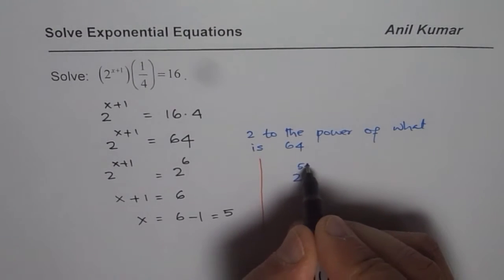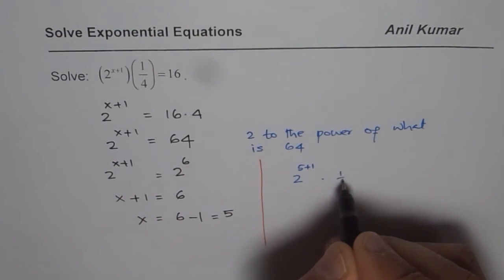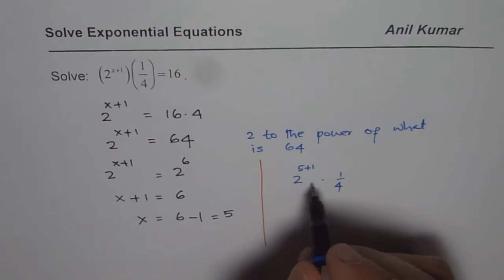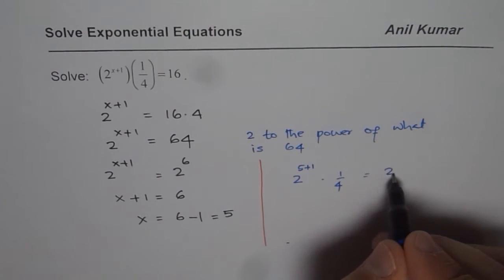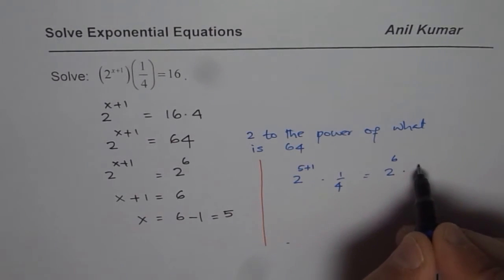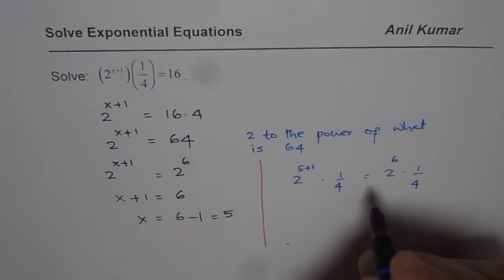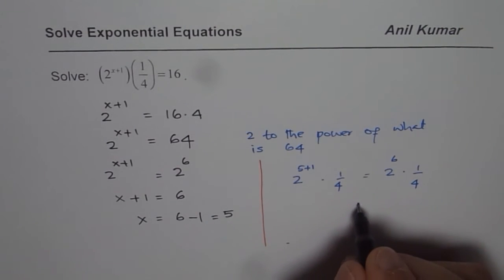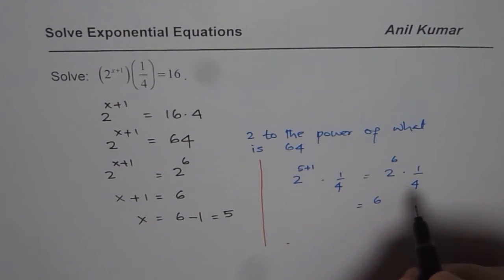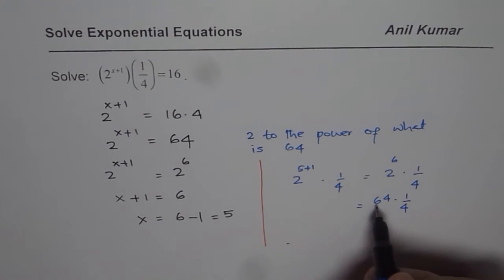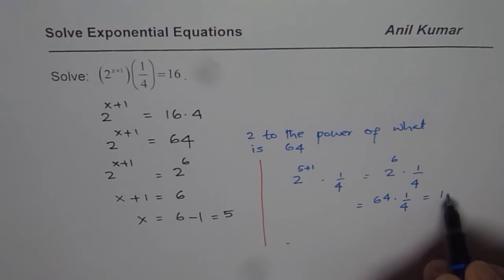That means we have 2 to the power of 6 times 1 over 4. 2 to the power of 6 we found was 64. So we will write this as 64 times 1 over 4. And when you divide 64 by 4, you do get 16. So that is the check.